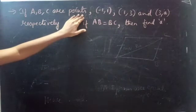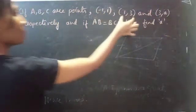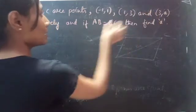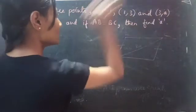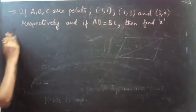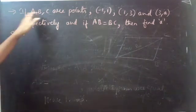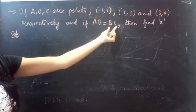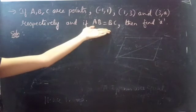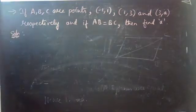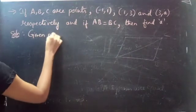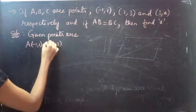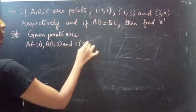If A, B, C are points, we are given three points A, B and C respectively. And if AB equals to BC, that is the distance between AB equals to the distance between BC, then find A. The given points are A(-1, 1), B(1, 3) and C(3, a).